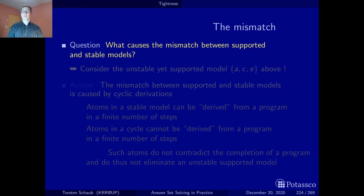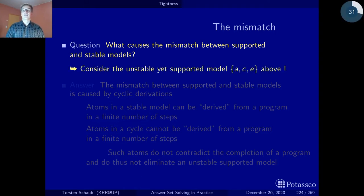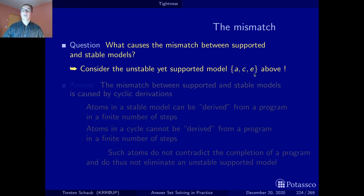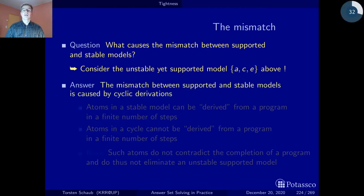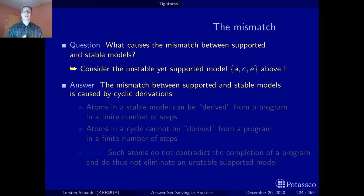The question we need to ask is: what causes the mismatch between supported and stable models? We have seen this on the unstable yet supported model in the last section — it's about this cyclic rule that allows us to derive atoms despite the completion. The answer is that the mismatch between supported and stable models is caused by cyclic derivations.